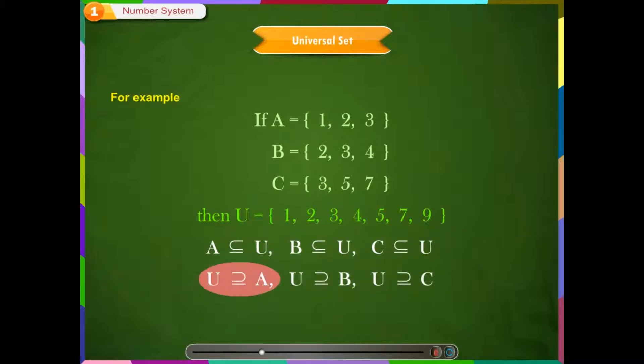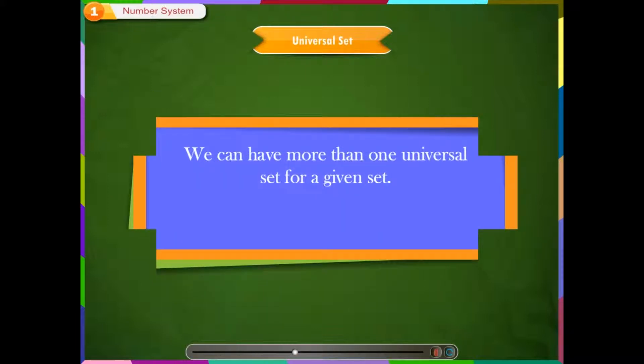Also, U is a superset of A, U is a superset of B, and U is a superset of C. The universal set can have one or more elements which are not present in any of the given sets. Like here, if you observe, the element 9 is present in U, but it is not present in any of the given sets.